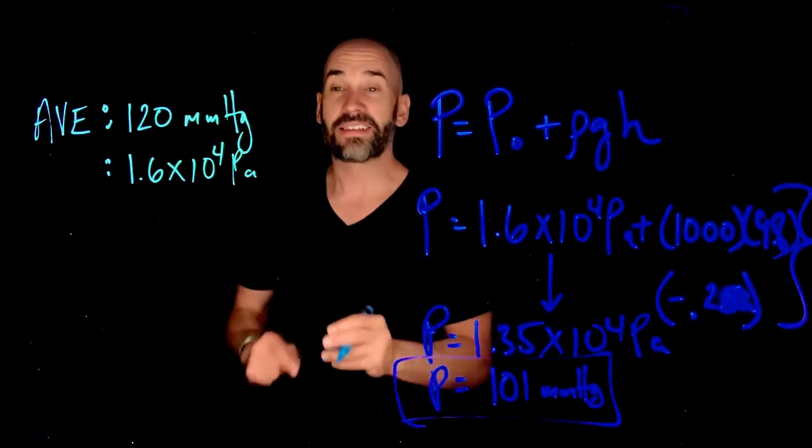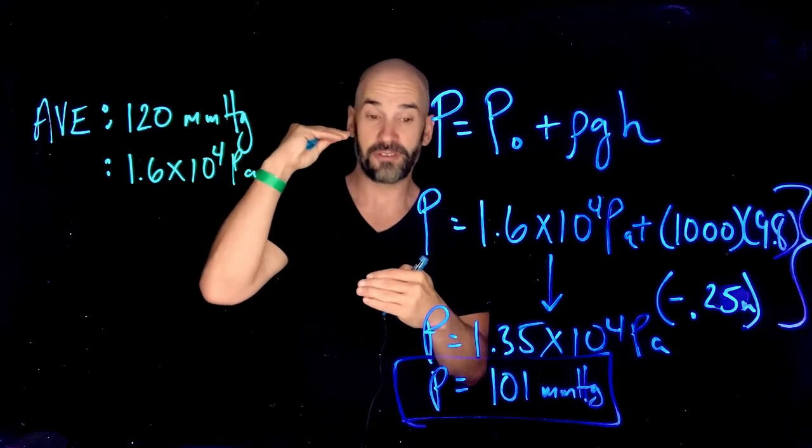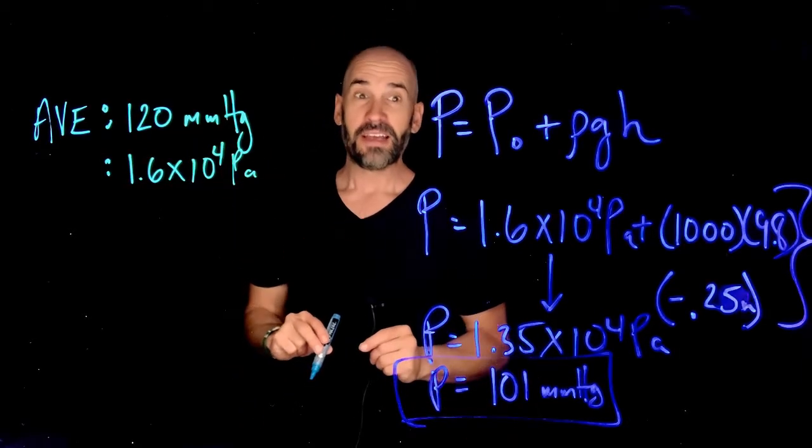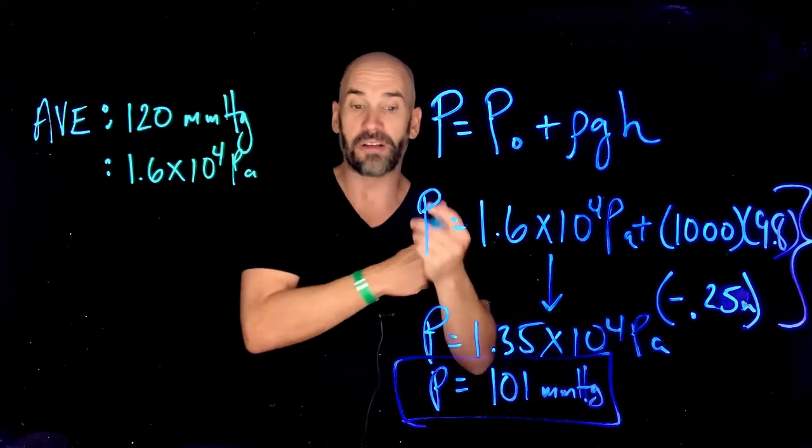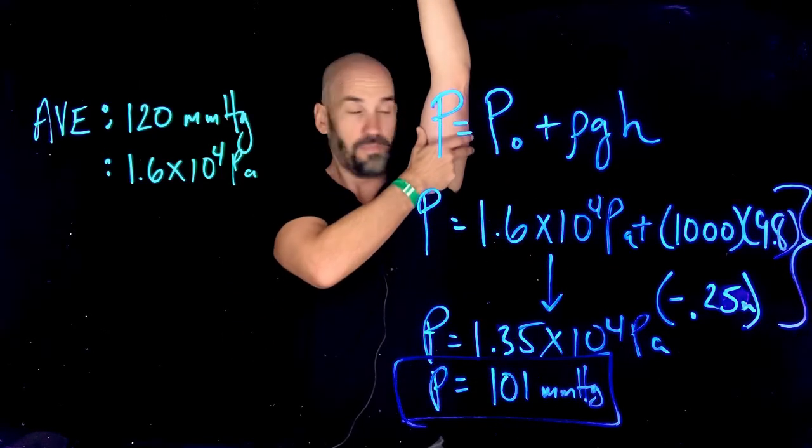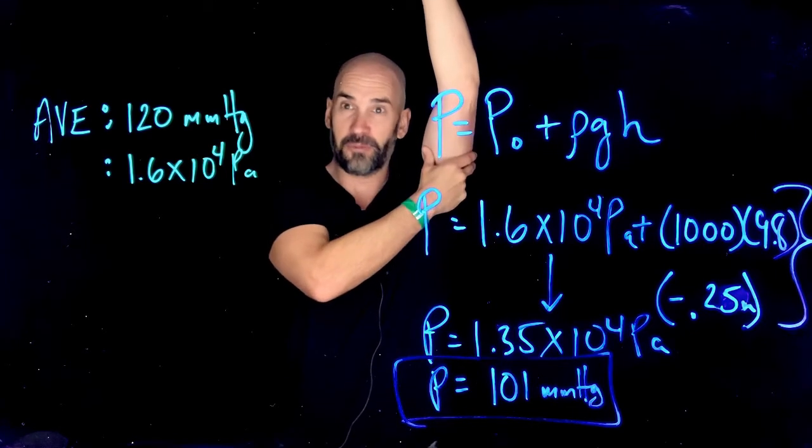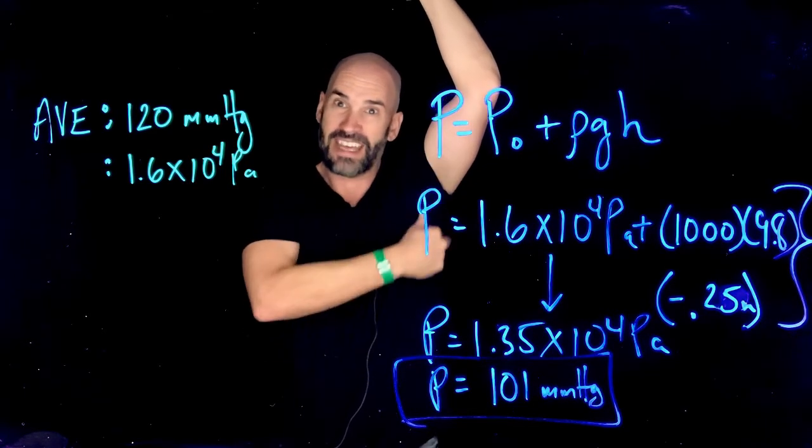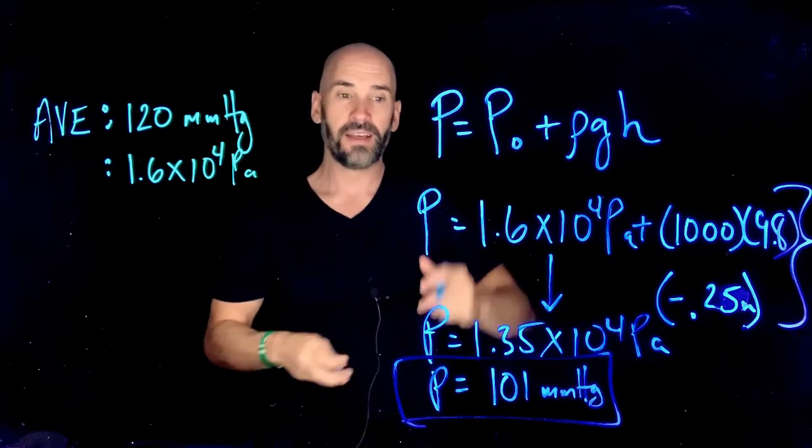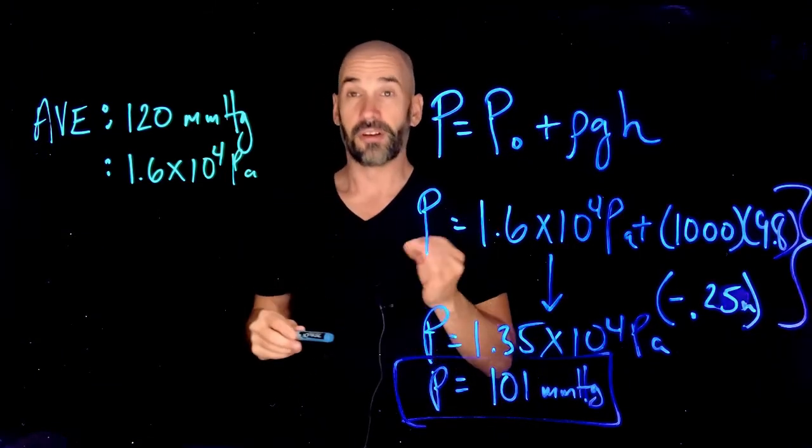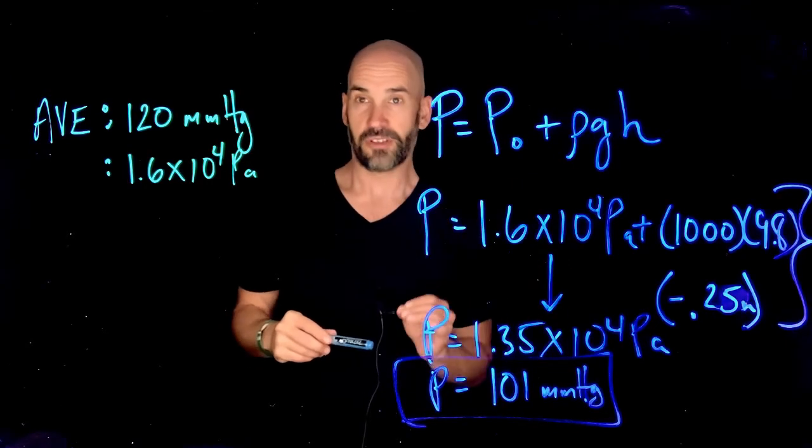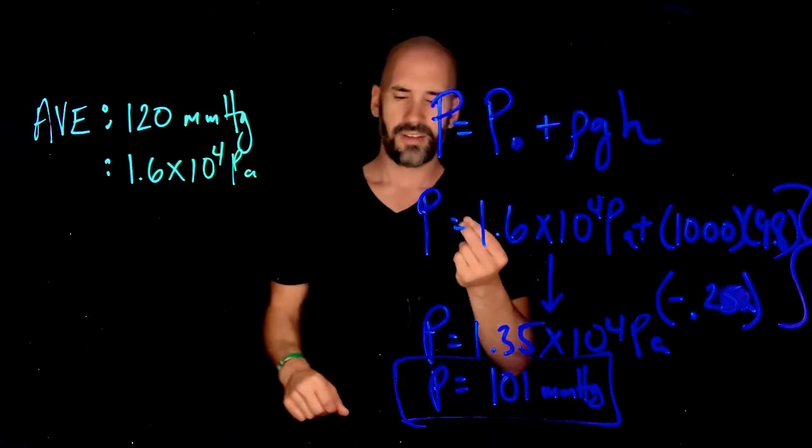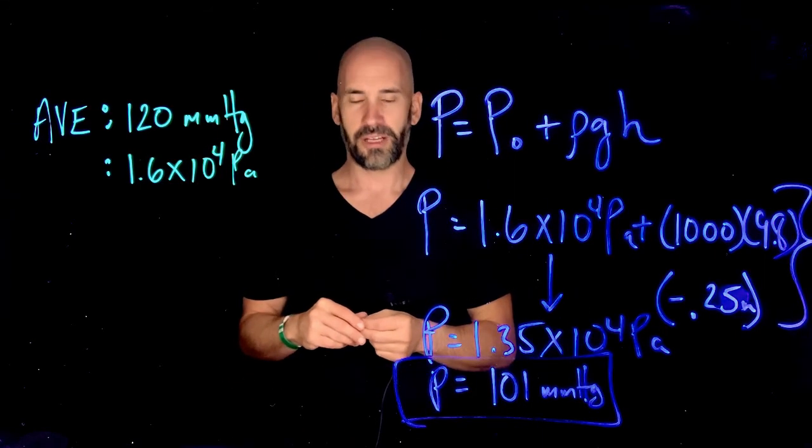Okay. So the systolic, meaning the top number that you get when you're taking your blood pressure, it would decrease from 120 to 101. So your blood pressure would look dramatically lower if you're actually taking your blood pressure up here next to your face. Why is that? Well, your heart has to work against gravity to get it up here, so the pressure is going to have decreased by the time it gets to this point. So next time your nurse yells at you for not having your arm in position, you know why. You can have a little bit more sympathy, and empathy is always a good thing. All right, it's been a pleasure. I'll see you next week.